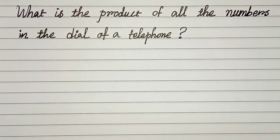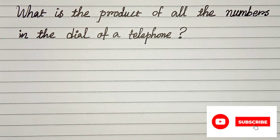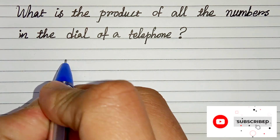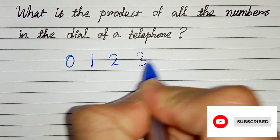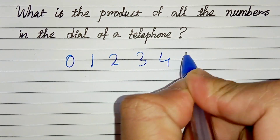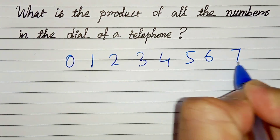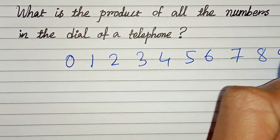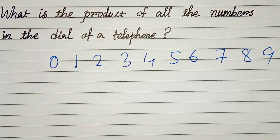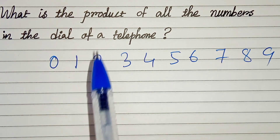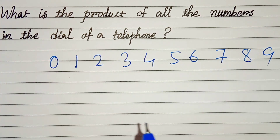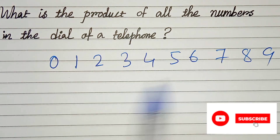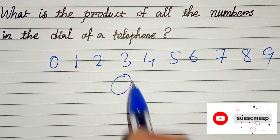The answer is zero, because in a telephone we have 0, 1, 2, 3, 4, 5, 6, 7, 8, and 9. We know that zero multiplied with anything gives us zero. That means the answer is zero.